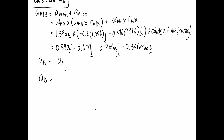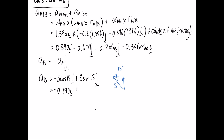The last term is the acceleration of B. Using the 15 degree angle to find the vector components: the magnitude is 0.3 metres per second squared. In the negative X direction it's negative 0.3 cos 15 i, and in the positive Y direction it's positive 0.3 sin 15 j, which we can simplify to numerical values.